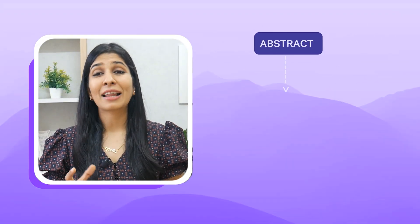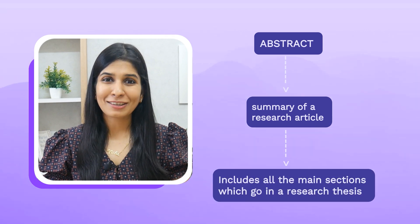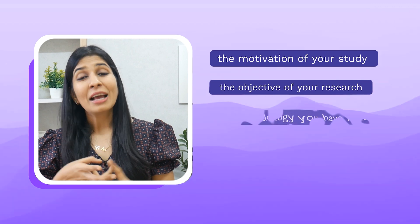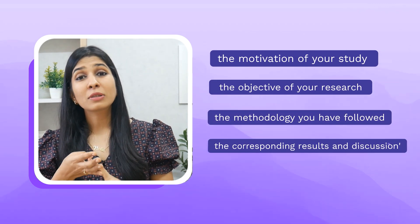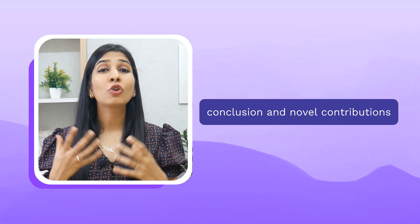The first main section of a research thesis is the abstract, which is like a summary of your entire thesis. This is where you summarize all the major sections, starting with explaining the motivation of your study, the objective of your research, the methodologies followed, the corresponding results and discussion, followed by a conclusion and the novel contributions from your work. I have made two detailed videos on how to write an abstract — one covering all the information to include and another with an example.